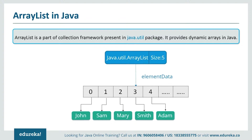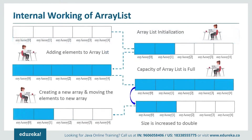ArrayList allows us to randomly access the list. ArrayList cannot be used for primitive types like int, char, etc. To access those, we need a wrapper class for such cases. Now let's move further and see the internal working of ArrayList.